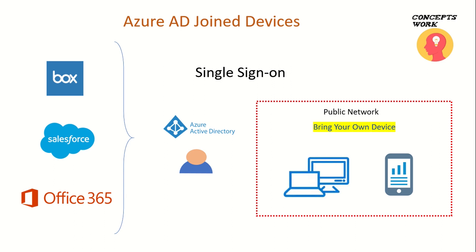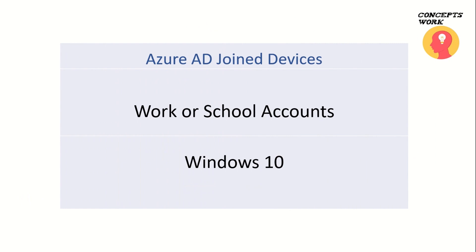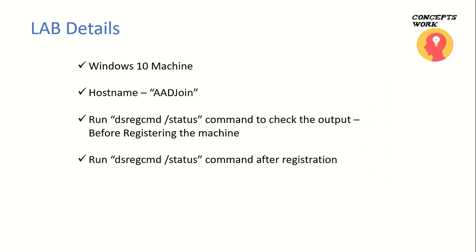The concept is the same — you get single sign-on. The key difference between Azure AD joined and Azure AD registered devices is that in Azure AD joined devices, you sign in to Windows with your corporate identity as well. Single sign-on works because a device object exists in Azure Active Directory and there is a PRT available on the device. This concept applies only to Windows 10 devices. For my lab, I've taken a Windows 10 machine with hostname 'aadjoin', and we'll run the DSREG command before and after joining to check the differences.